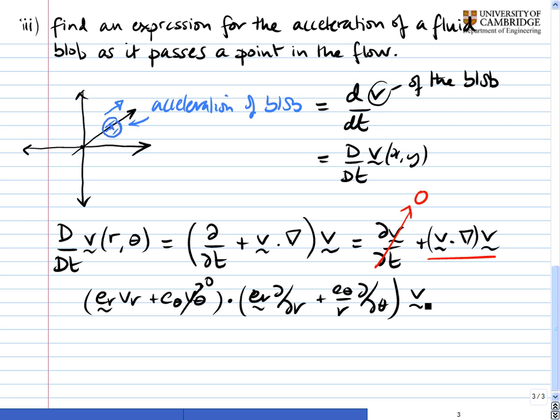until we actually make it operate on v here. So if we just look at this first expression here, which is the v dot grad, what we have is an e_r dotted with e_r v_r d by dr. This term is equal to 0,